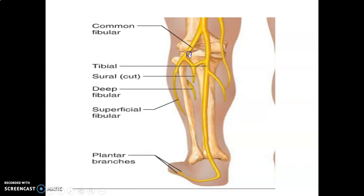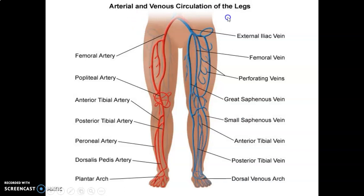The sciatic nerve divides into common peroneal and tibial nerve. The common peroneal divides into deep peroneal — which enters the anterior compartment — and superficial peroneal — which remains in the lateral compartment. The tibial nerve continues downward within the posterior compartment and at the tarsal tunnel divides into medial and lateral plantar nerves. Regarding vessels: the femoral artery gives the profunda femoris, then passes through the adductor canal and at the adductor hiatus becomes the popliteal artery, which participates in the genicular anastomosis.